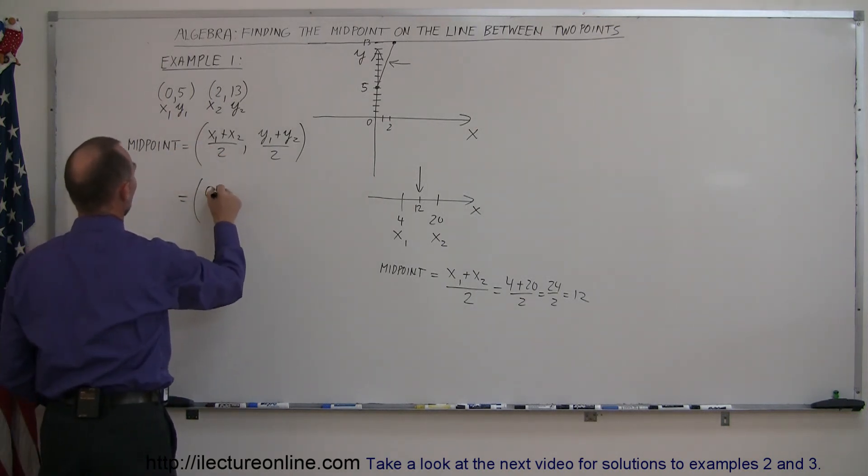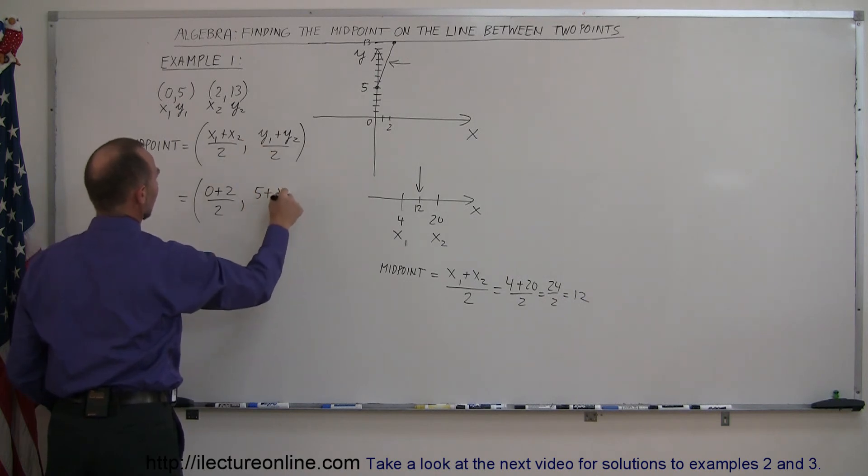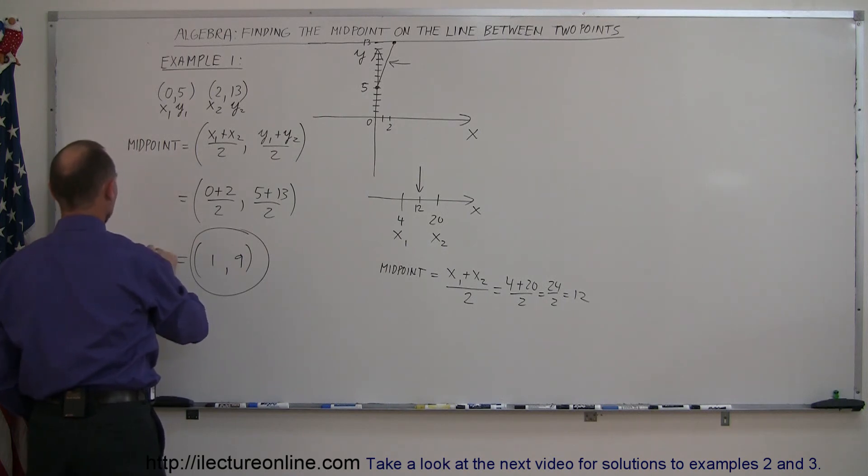x1 is 0 plus x2, x2 is 2, divide that by 2, comma. Here we have y1 which is 5, plus y2 which is 13, and divide that by 2. And simplifying we get 2 divided by 2 which is 1, and 18 divided by 2 which is 9, and there we go, that's the midpoint between the two points that were given.